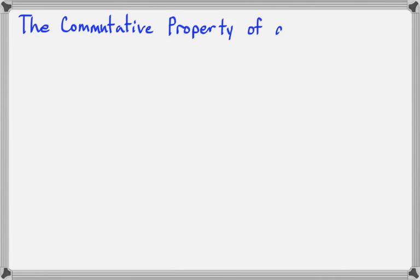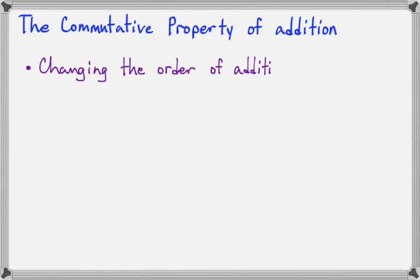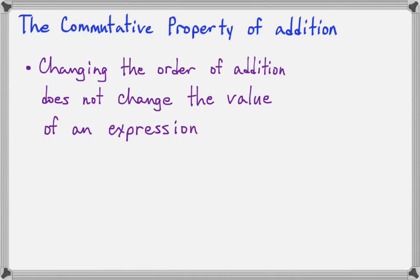Now here is the commutative property of addition. All it says is that changing the order of the terms, changing the order of addition, does not change the value of an expression. And we know this is true because we've seen things like 3 plus 5 equals 8, but we also know that if we change the order, 5 plus 3 equals 8.